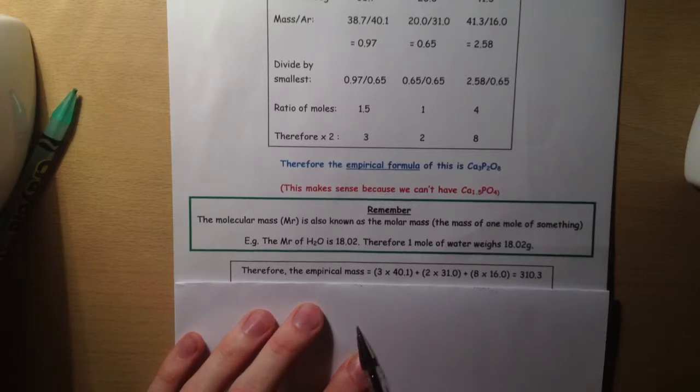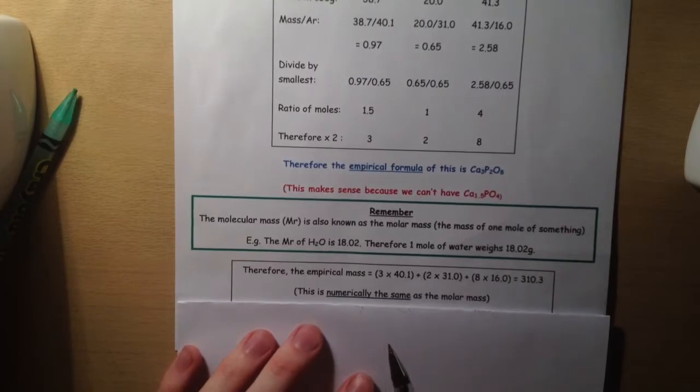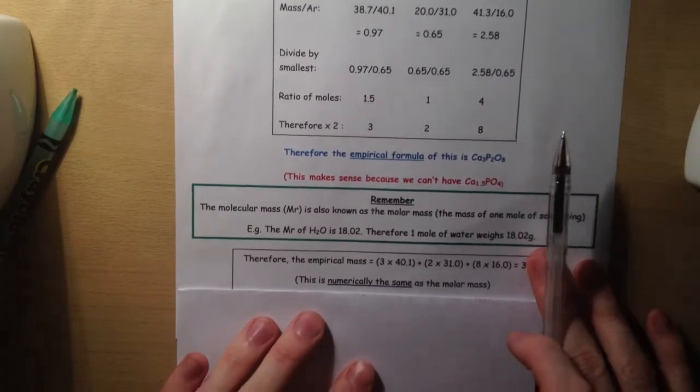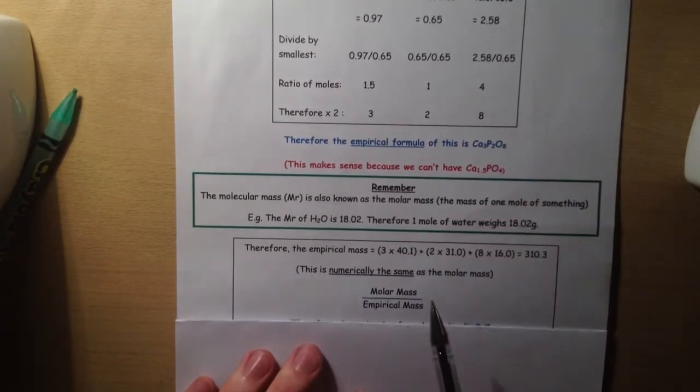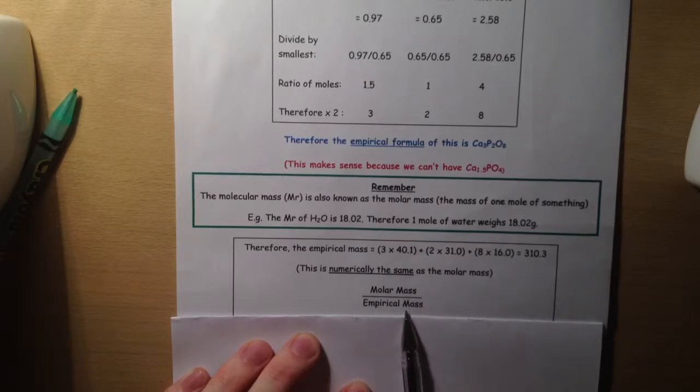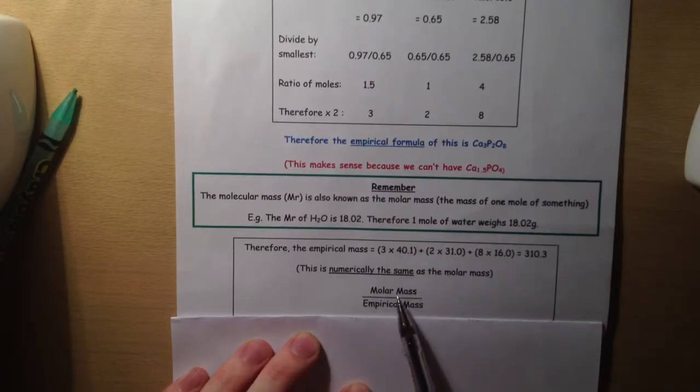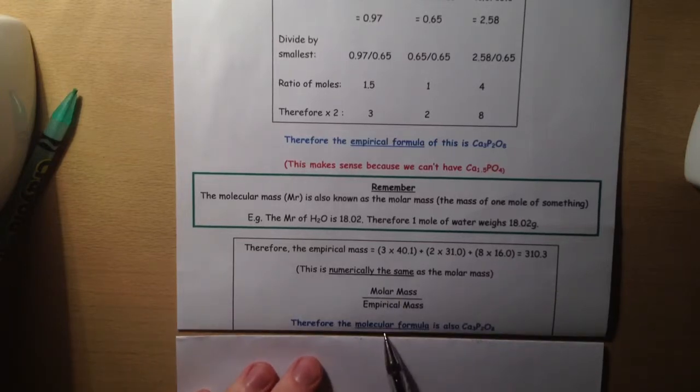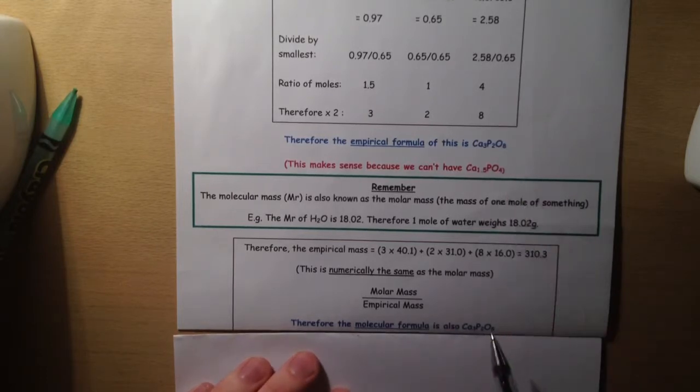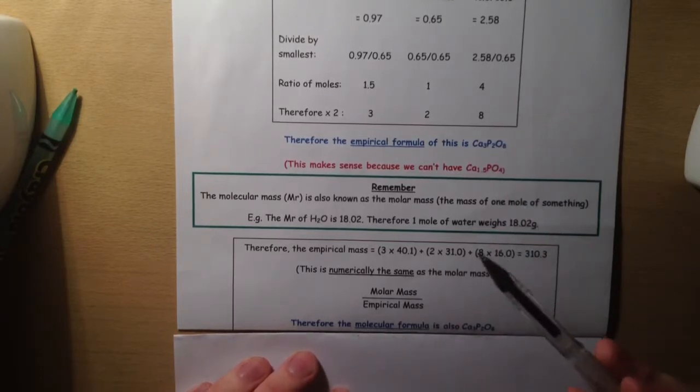We are told that our molecular mass is 310, so it's numerically the same as the molar mass. The molar mass divided by the empirical mass will tell us what ratio we're looking at. In this case, it's 310 divided by 310.3, which is obviously 1, so our molecular formula is also Ca3P2O8. It's the same as our empirical formula.